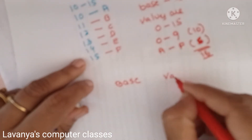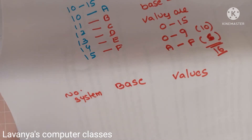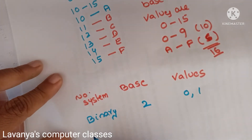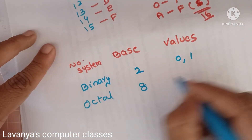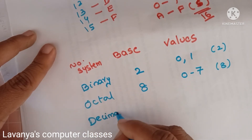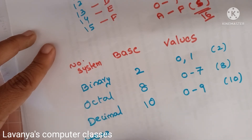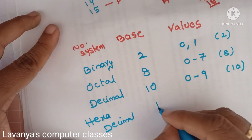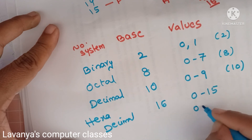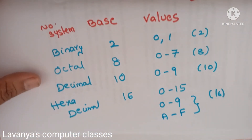Let me explain all four number systems with their base and ranges. Binary number system: base is 2, possible values are 0 and 1, totally 2 values. Octal: base is 8, values are 0 to 7, totally 8 values. Decimal number system: base is 10, values are 0 to 9, totally 10 values. Hexadecimal number system: base is 16, values are 0 to 15 — with 0 to 9 as numerical values and A to F as alphabets (A=10, B=11, up to F=15) — totally 16 values. This is the number systems overview.